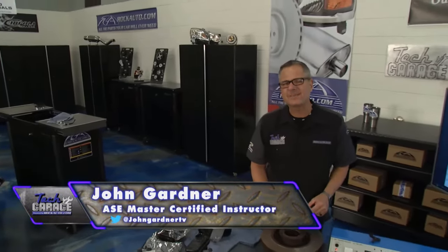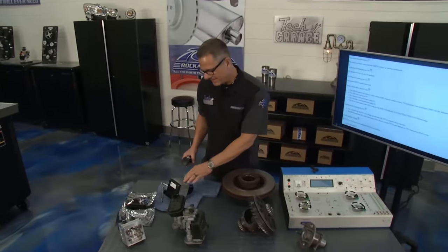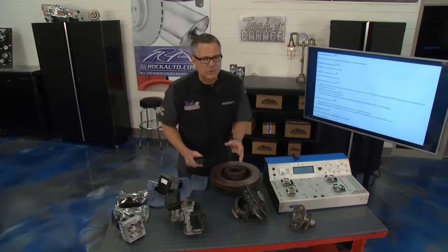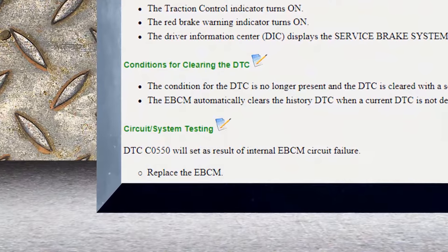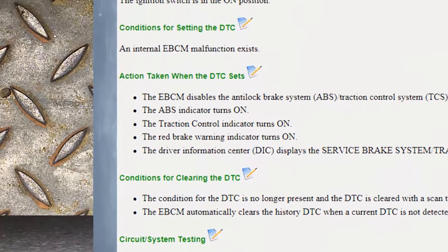rockauto.com. Well, Brian's got the ABS unit off and it's sitting right here on the table. Before we dive into the ABS unit, let's take a look at that code we found. That code is a C0550. The C stands for chassis and then our code's right after that.